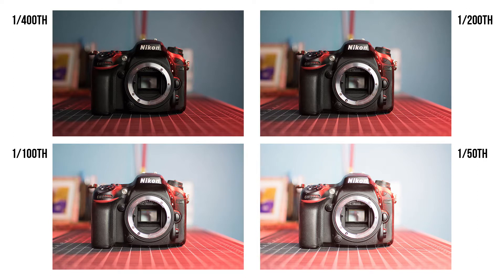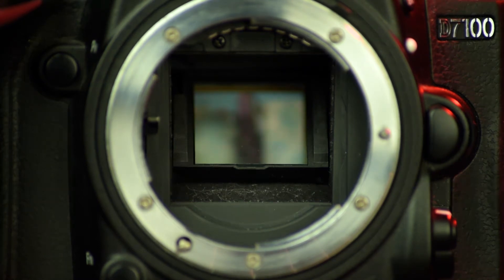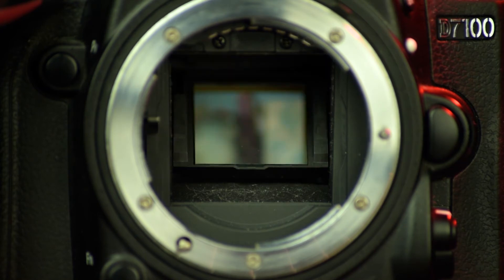As we can see from our side-by-side comparison, 1/50th of a second let more light into the camera, giving us a brighter image. Here's a close-up look at what's going on inside your camera when you're taking a picture — these are faster shutter speeds, and here are some slower shutter speeds. You can clearly see the difference in how long the shutter stays open between the faster and slower shutter speeds.